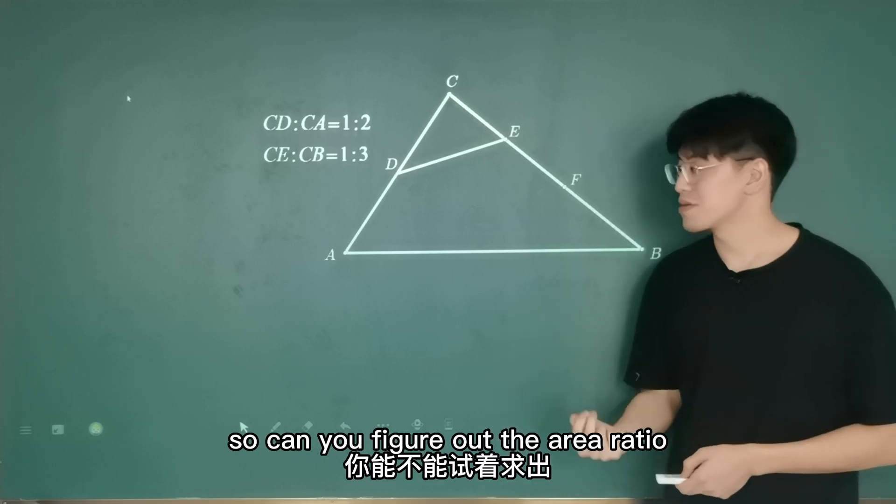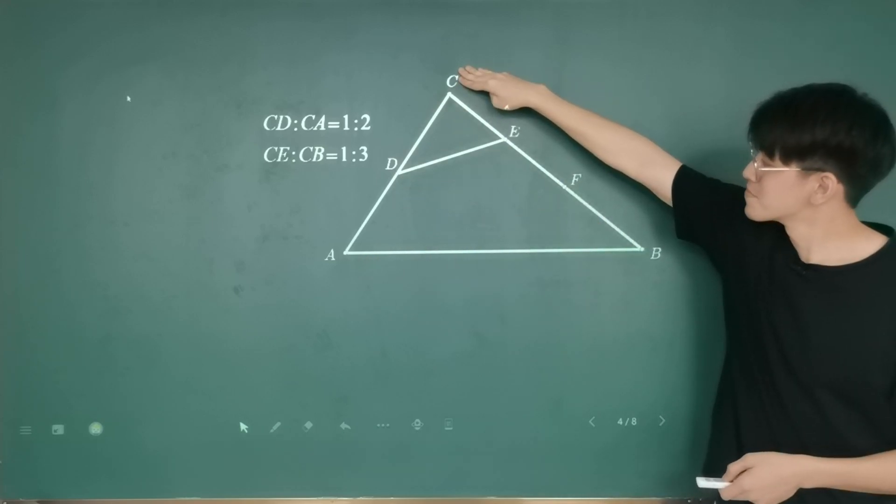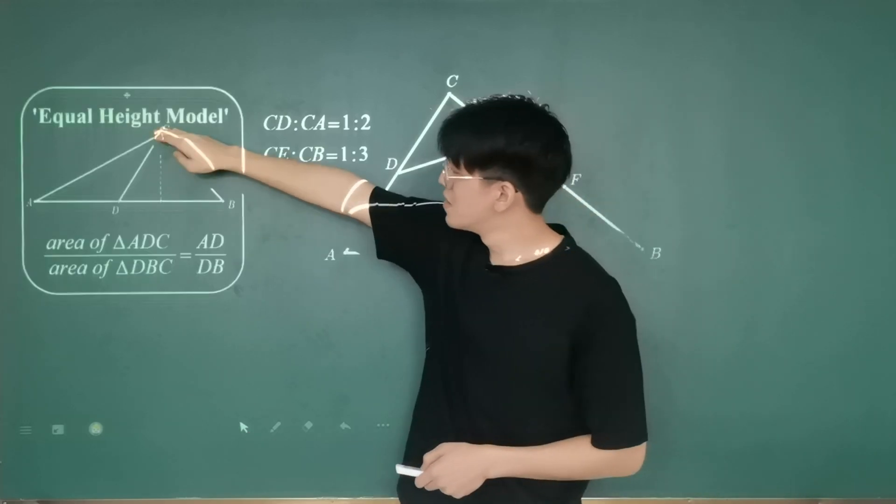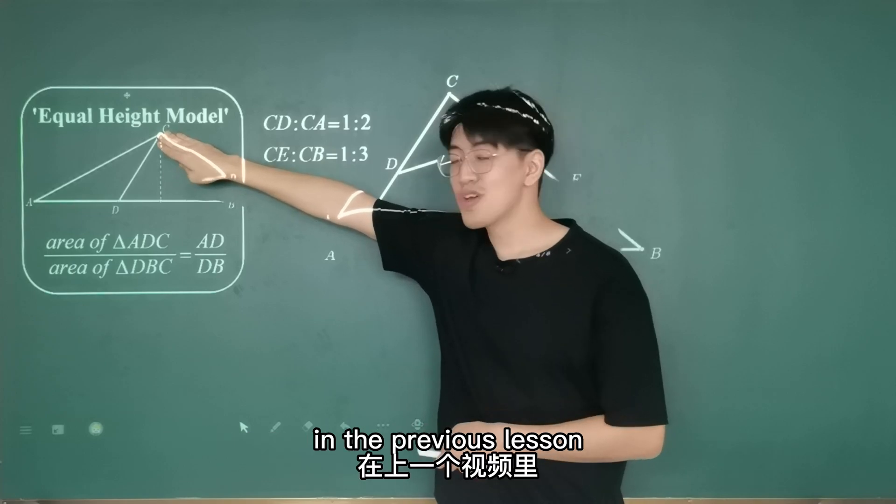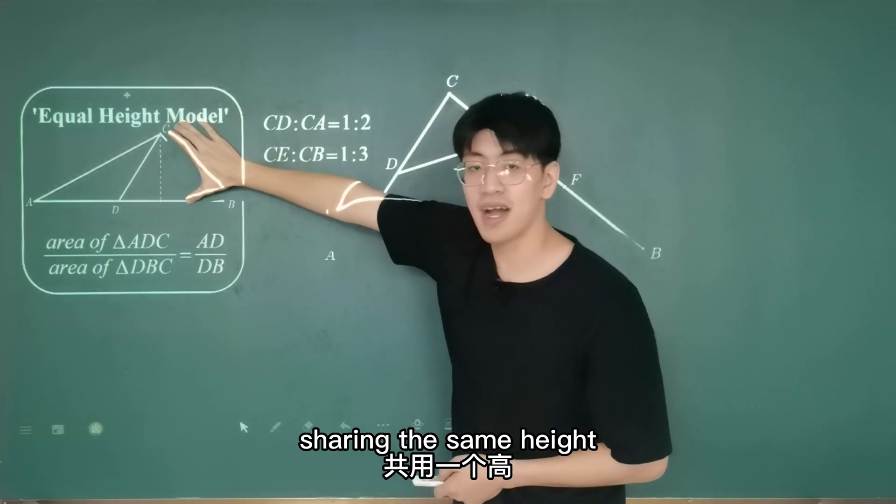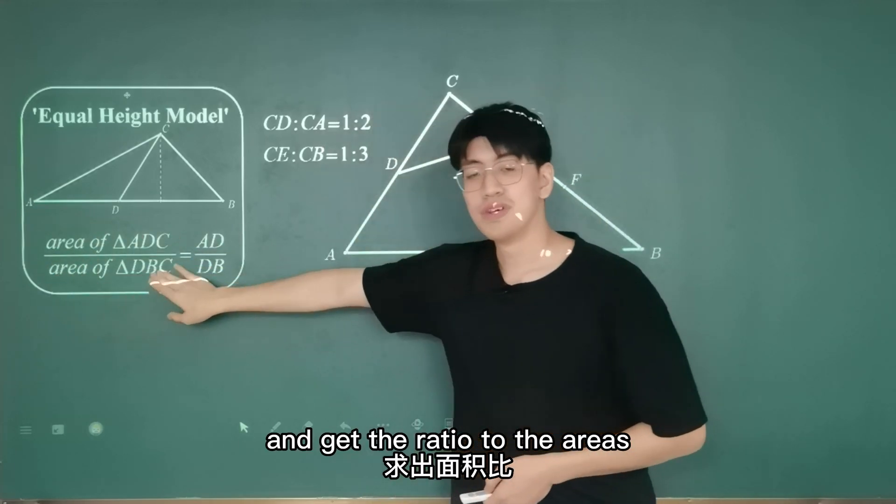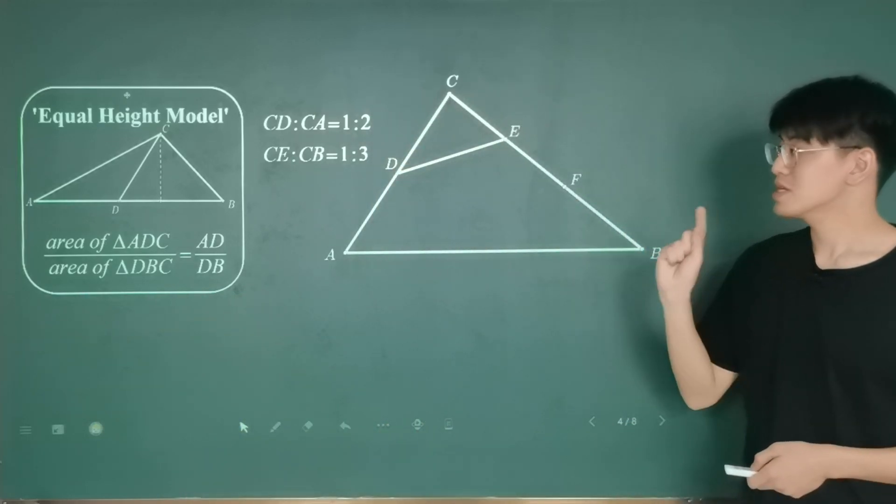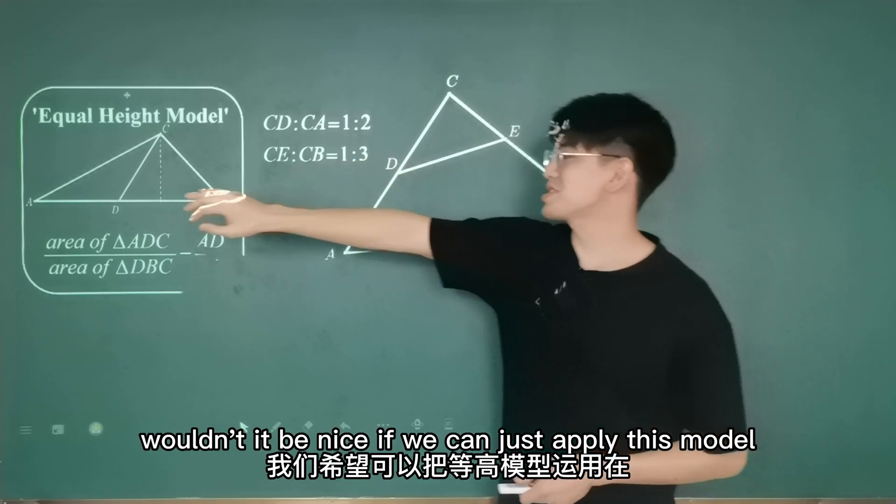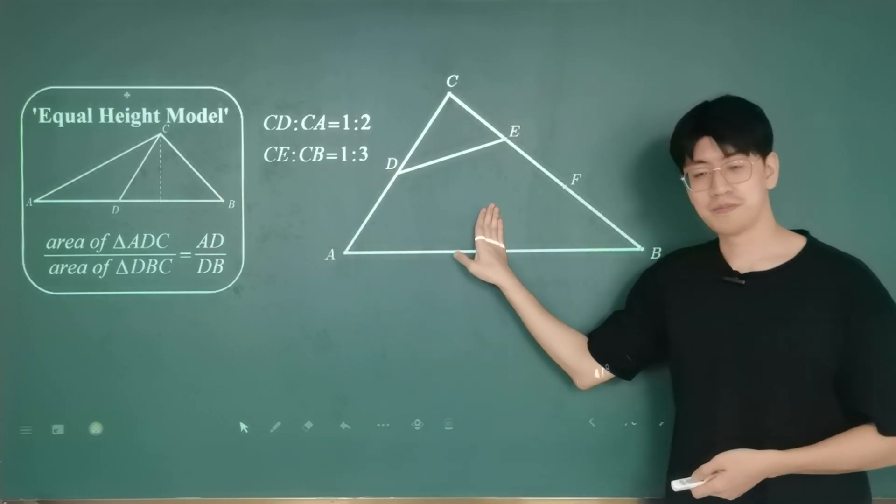So can you figure out the area ratio of triangle DEC to triangle ABC? When you see the word ratio of the area or area ratio, it reminds us of the equal height model that we just learned in the previous lesson. The equal height model says if we have two triangles sharing the same height, we can just make use of the base ratio and get the ratio of the areas. So we have a bunch of ratio of the sides here. Wouldn't it be nice if we can just apply this model into this shape? But we can't since they don't look the same.